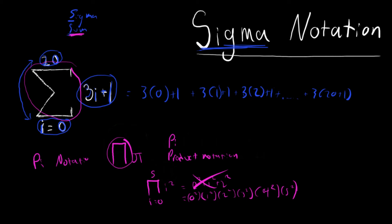So this is the product of all of these. Pi notation brings out the product of all of that.